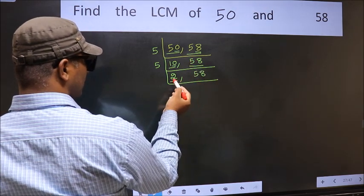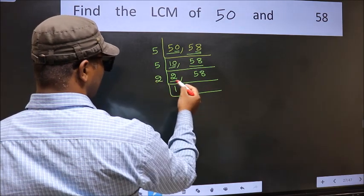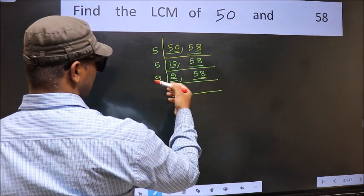Now here we have 2. 2 is a prime number so 2 times 2. The other number 58 last digit 8 even so this is divisible by 2.